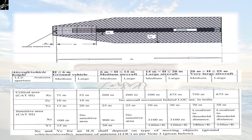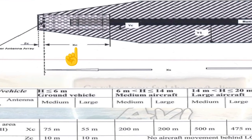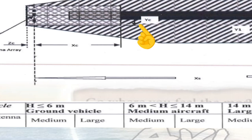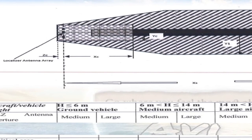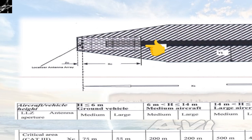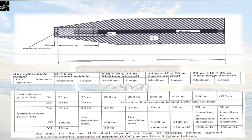For CAT3 with ground vehicles, XC is the area in front of the localizer, ZC is the area behind it, and YC is the area on both sides of the runway centerline. For ground vehicles using a medium aperture antenna, XC is 75 meters; ZC is 10 meters for both medium and large aperture; and YC is 15 meters for medium aperture and 20 meters for large aperture.